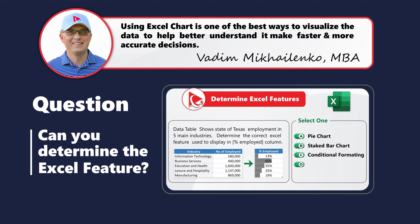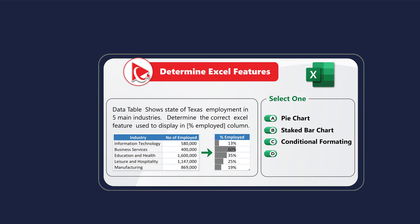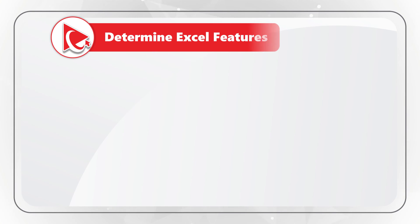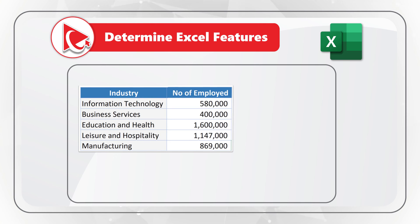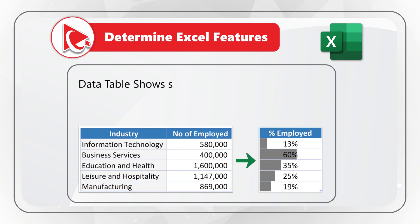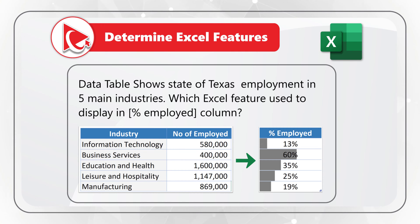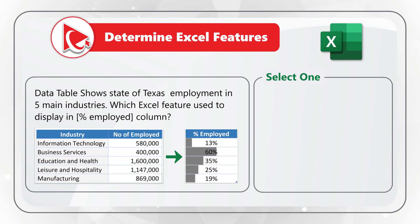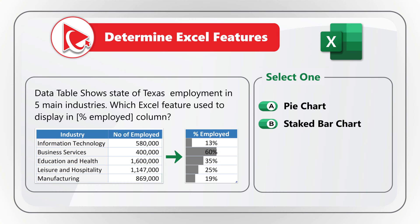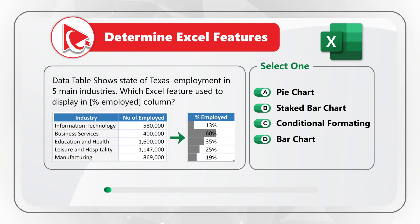Here's an amazing question to test your knowledge of Microsoft Excel features. You're presented with a set of data showing industry and number of people employed. The data table shows Texas employment in five key industries, and you need to determine the correct Excel feature used to display the percentage employed column. You have four choices: A) pie chart, B) stacked bar chart, C) advanced conditional formatting, and D) bar chart. Give yourself a little time to come up with the solution.